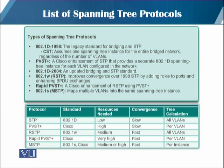Legacy STP and PVST Plus have slow convergence, whereas Rapid PVST Plus and RSTP provide fast convergence. The spanning tree calculation differs between these protocols — STP and PVST Plus use the legacy approach, while Rapid PVST Plus and RSTP use enhanced BPDU exchanges for faster convergence.